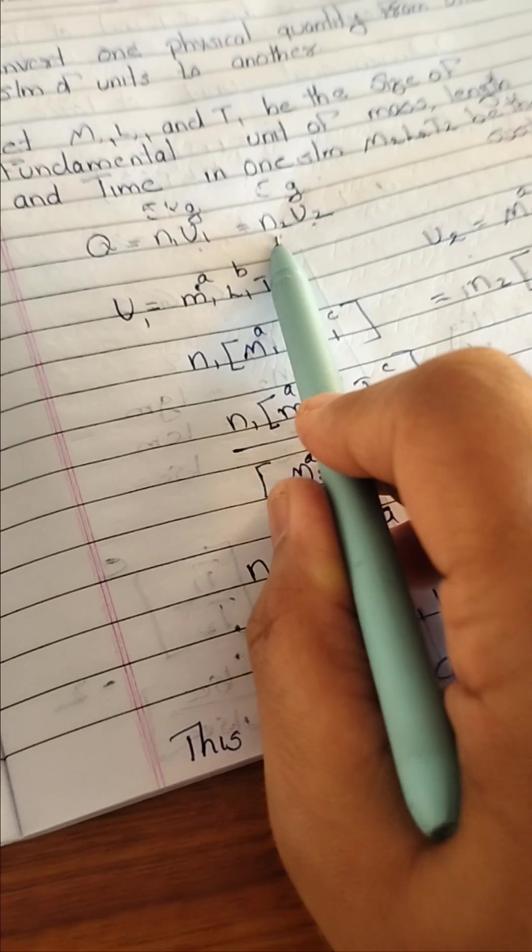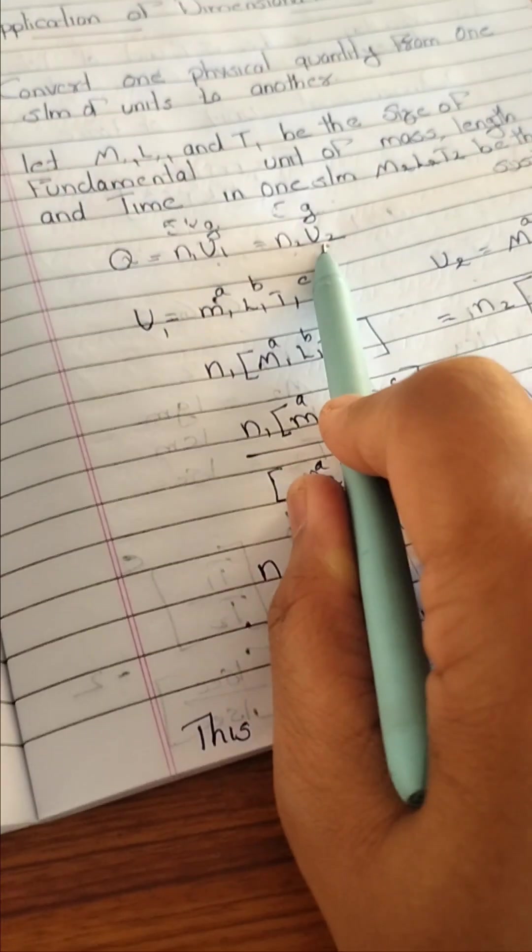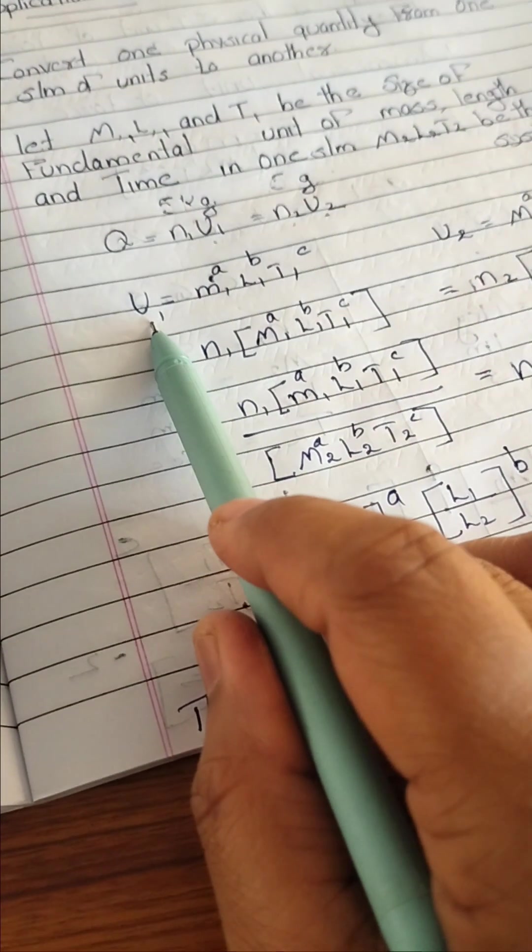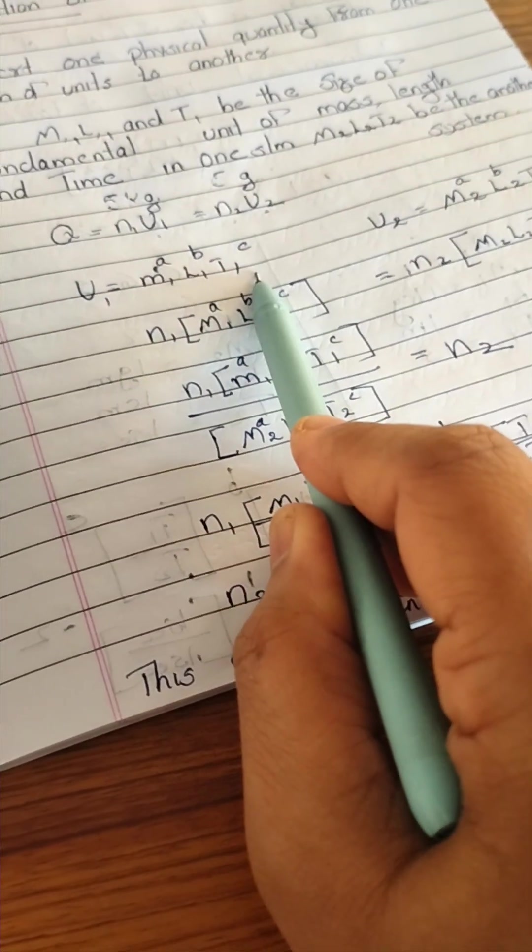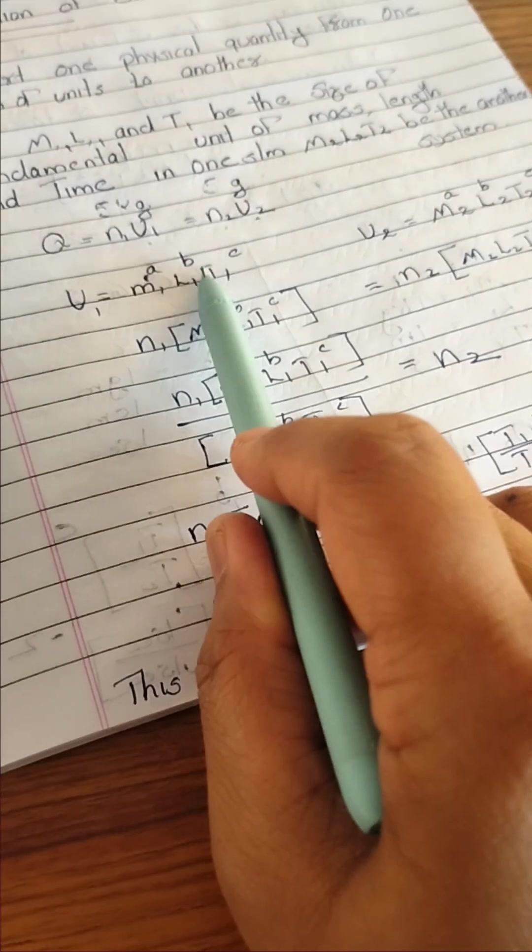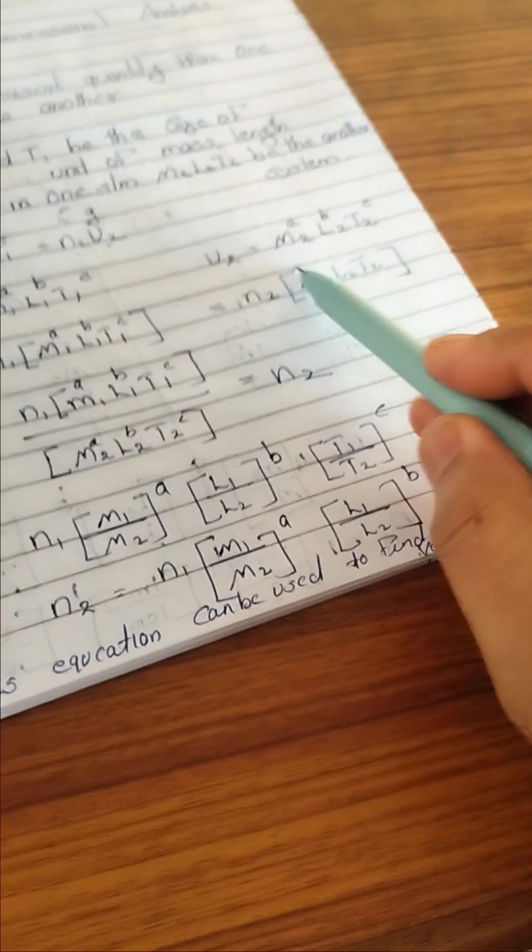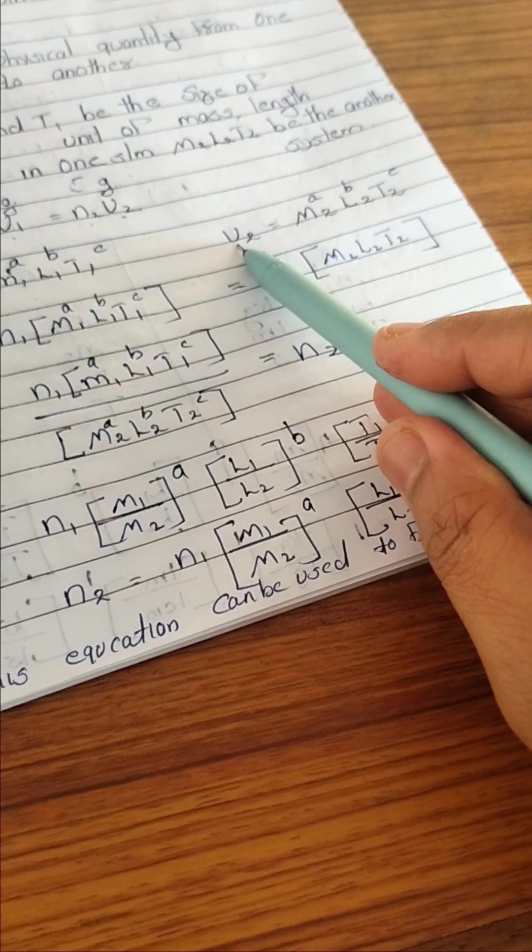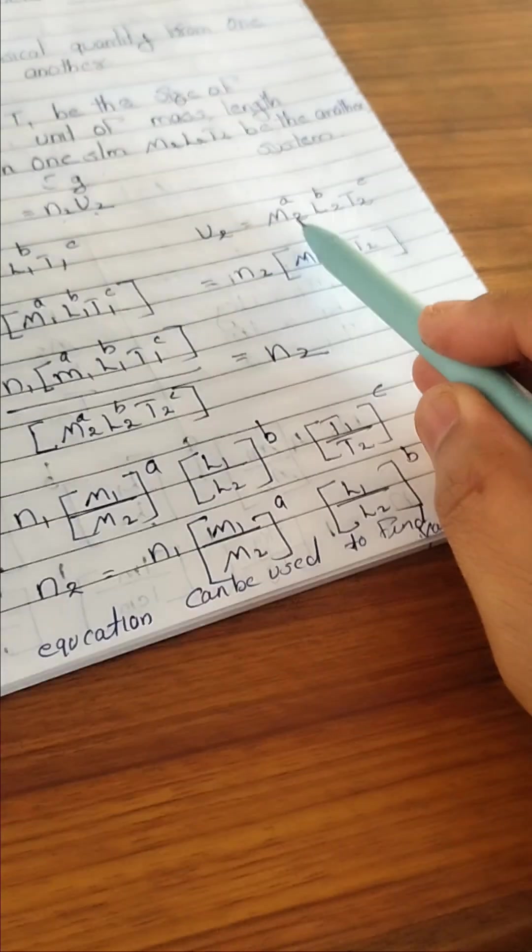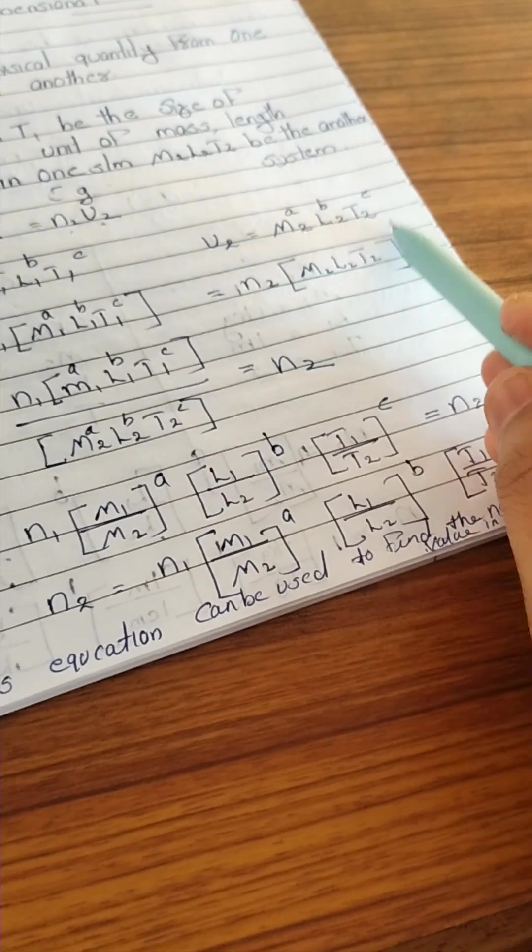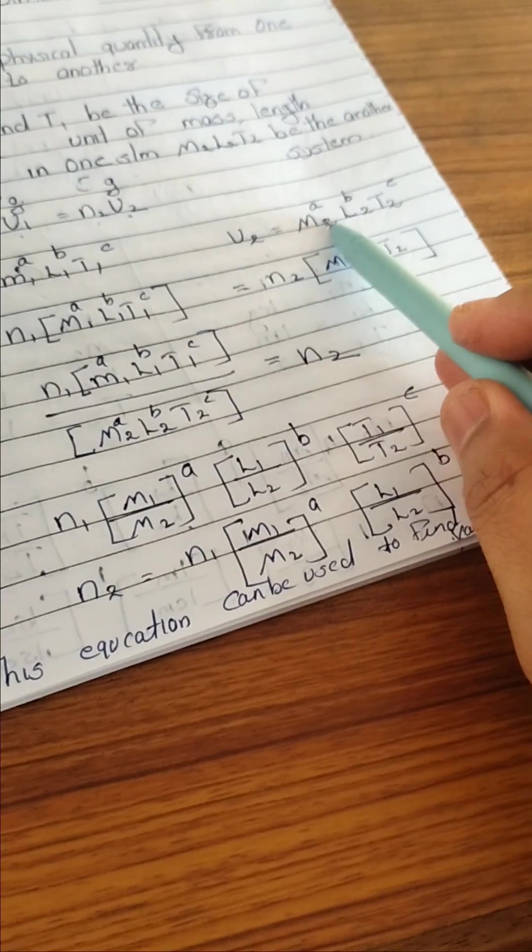For the general expression, N1, U1 in a first unit of system. N2, U2. What we want to convert? We want to convert one system of unit to another. So I am writing what is U1. U1 means M1, L1, T1. Powers are A, B, C. Then another system of unit, I am calling it as U2. U2 is also contained in M, L, T. Second unit, M2, L2, T2. Powers are same, A, B, C.